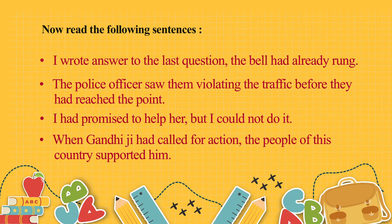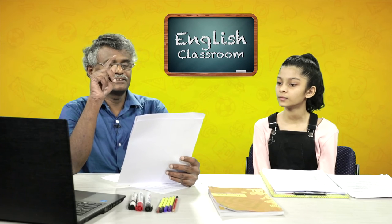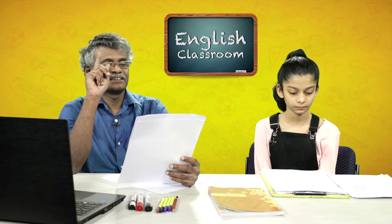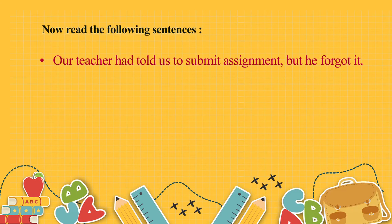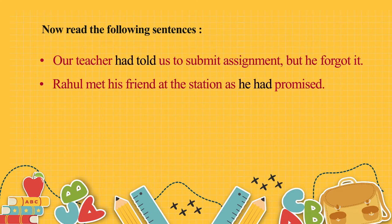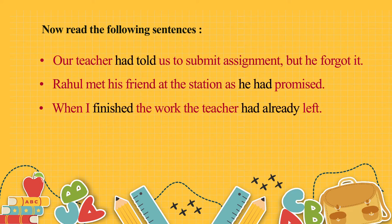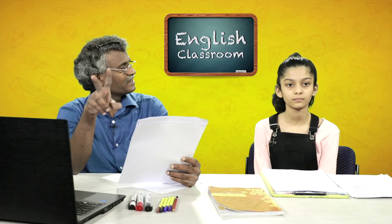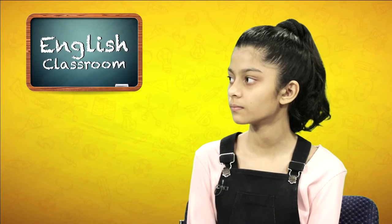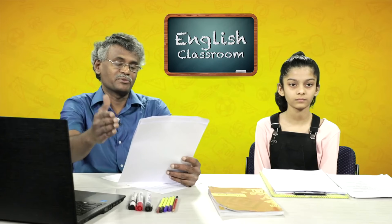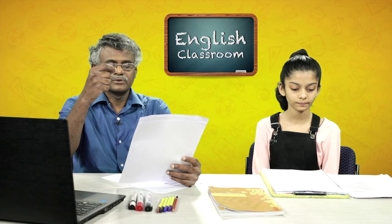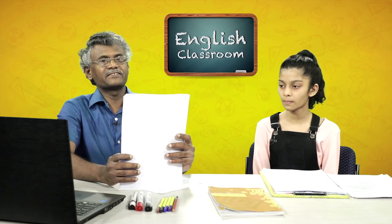When Gandhiji called for action, people of this country supported him. Look at the verb forms in bold. 'Our teacher had told us to submit the assignment, but he forgot it.' Which action took place first? The teacher had told first, but he forgot later. 'Rahul met his friend at the station as he had promised' — he promised first, then met him. 'When I finished the work, the teacher had already left' — teacher left before. So when there are two actions in the past, the earlier action uses past perfect: 'had rung,' 'had promised.'